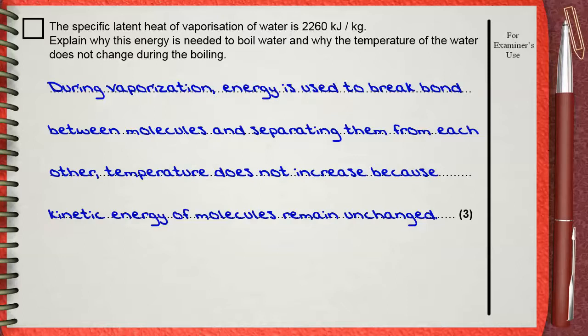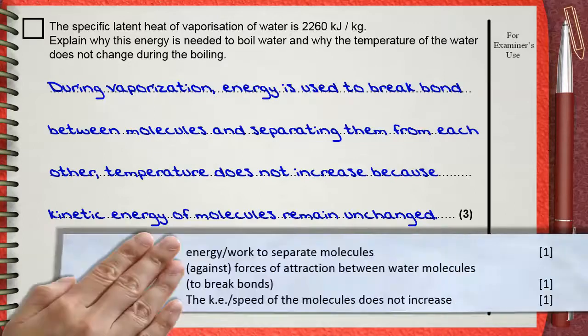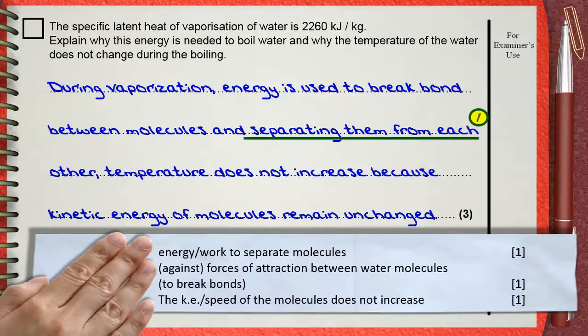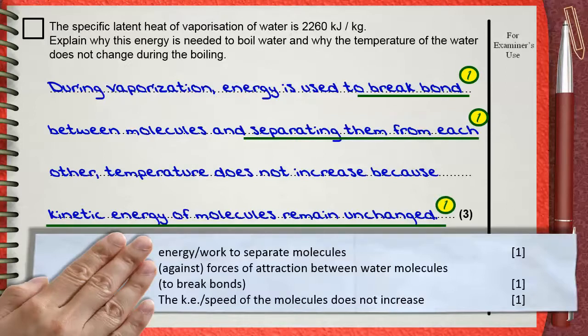The examiner gives three marks for this question. The first mark is to mention energy or work to separate molecules. The second mark is for working against the force of attraction between water molecules to break bonds. The third mark is for stating that the kinetic energy and speed of molecules do not change, which is why the temperature does not change. Three marks out of three marks.